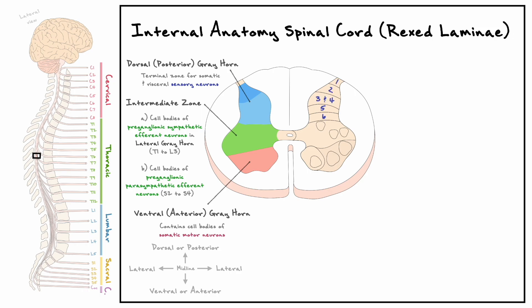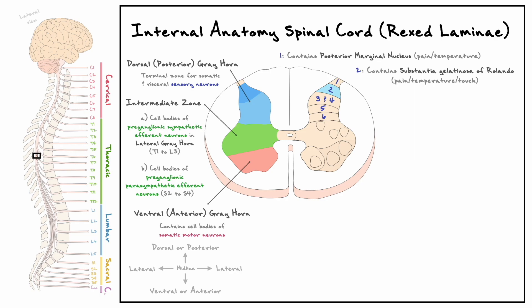The first six Rexed laminae are in the dorsal horn, organized in horizontal layers, and play roles in processing sensory information. Lamina 1 contains the posterior marginal nucleus, receiving pain and temperature information. Lamina 2, also known as the substantia gelatinosa of Rolando, receives pain, temperature, and touch. Laminae 3 and 4 share the nucleus proprius, receiving pain, temperature, and touch. Laminae 5 and 6 together allow processing of touch, proprioception, and pain from visceral organs — explaining why the dorsal horn is divided into two shades of blue.